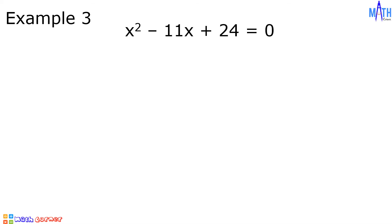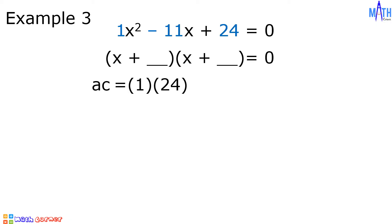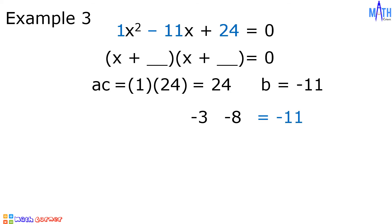Example number 3: x squared minus 11x plus 24 is equal to zero, where a is equal to 1, b is negative 11, and c is 24. Since a is equal to 1, we use the same format. Let us multiply a and c: 1 times 24 is equal to 24. Let us find factors of 24 that when added equal negative 11. The factors we need are negative 3 and negative 8, since negative 3 plus negative 8 is equal to negative 11.